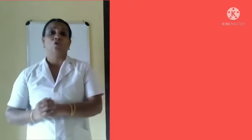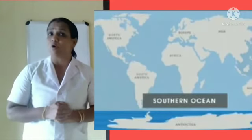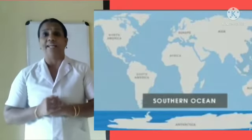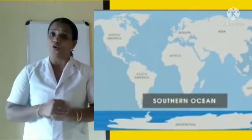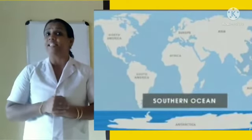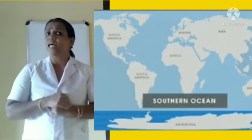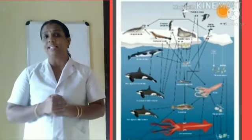Next we move to the fourth ocean, the Antarctic Ocean. The ocean bordering Antarctica is known as the Antarctic Ocean. It is also known as the Southern Ocean because it is located in the southern region. Since the region experiences severe cold, the surface of this ocean is almost entirely frozen. It is believed that the ocean bed is rich in minerals. Many varieties of fish are also present in this ocean.